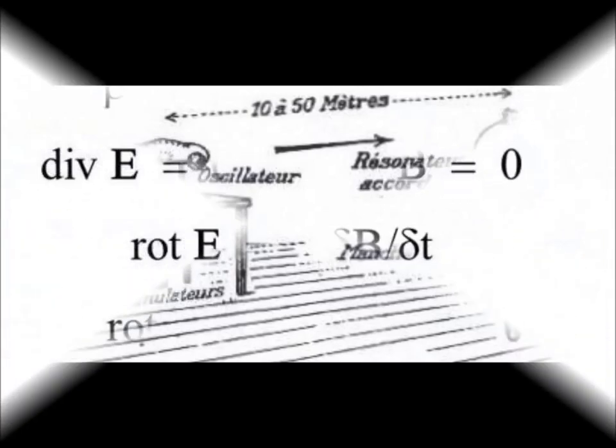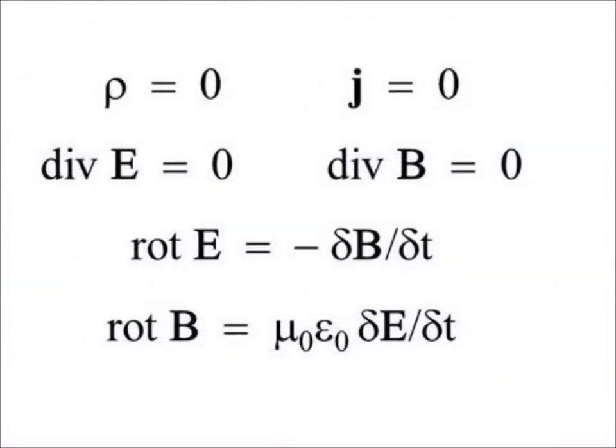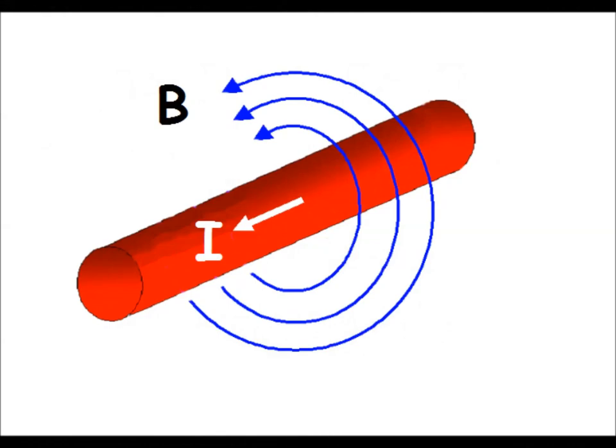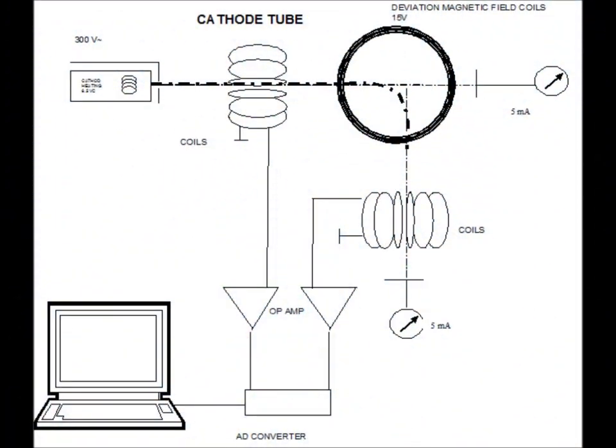The problem seemed to be solved, but there was another serious problem. The Maxwell-Hertz equation is based on the belief that magnetic fields result from the motion of electrons. This equation is therefore not invariant in a Galilean reference frame change. However, the magnetic field cannot result from the movement of electrons.